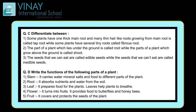Flower — it turns into fruits and provides food to butterflies and honeybees. Flower jo hai woh fruit mein turn hota hai aur butterflies aur honeybees ko food provide karta hai. Fifth, fruit — it covers and protects the seed of the plant. Fruit jo hota hai woh cover karta hai aur seeds ko protect karta hai.